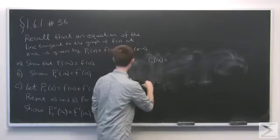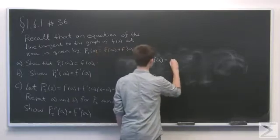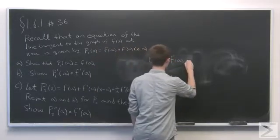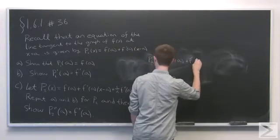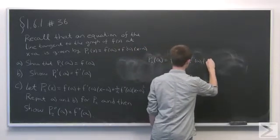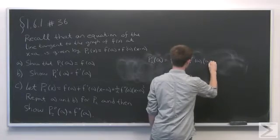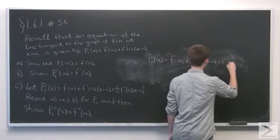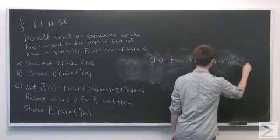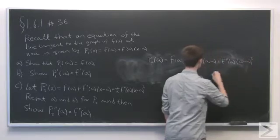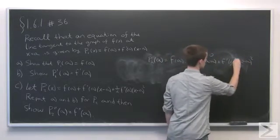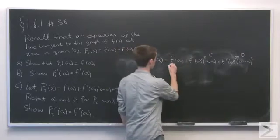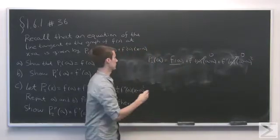So p2(a) will be equal to f(a) + f'(a)... Now, this would be times a - a, or just zero, plus f''(a) times (a - a)². Well, these last two terms just go to zero, so all we're left with is f(a), and we see that they do indeed agree.